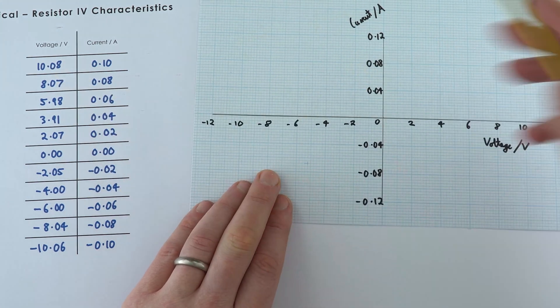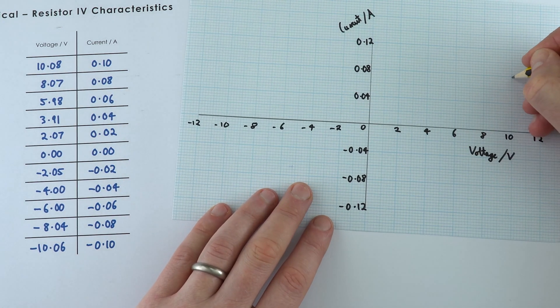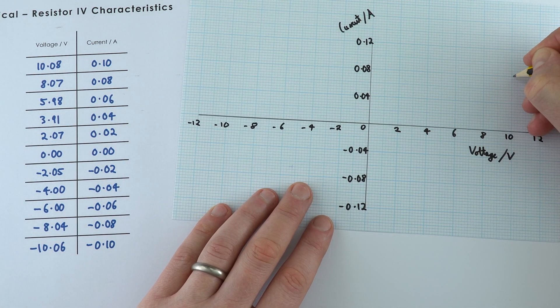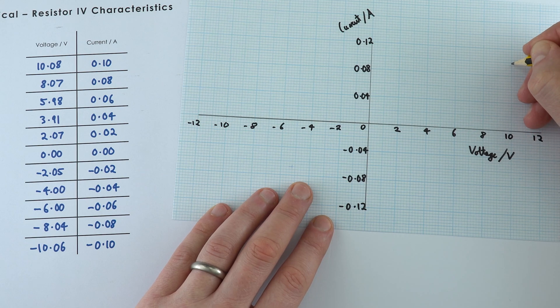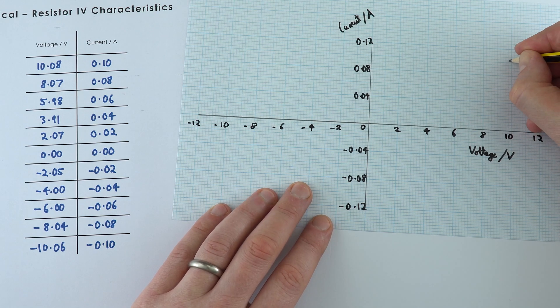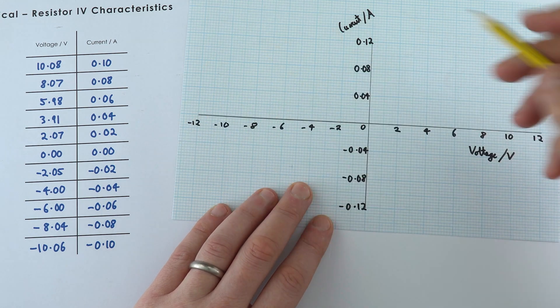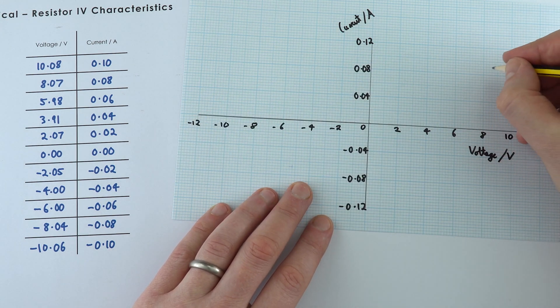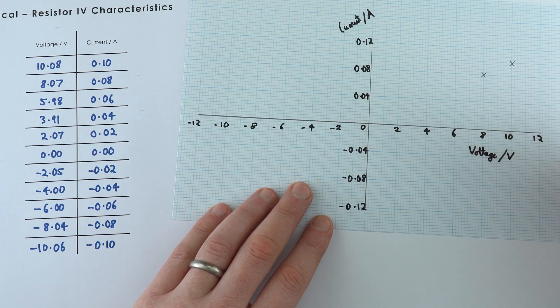When it's 10.08, that's pretty much exactly 10 on this graph, and that's a value of 0.10, so that's over here. When it's 8, we've got a value of 0.08, and so on.